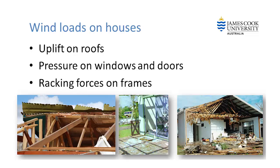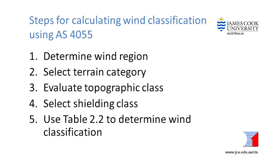Hello. This video aims to help builders and designers determine wind classifications for new houses or renovations anywhere in Australia using AS4055, the Australian standard wind loads for housing. If you have a copy of AS4055, you may want to get it out now. Correct wind classification is important to prevent building damage. Wind loads on houses generate uplift on the roof, pressures and suctions on windows, and racking forces on the walls. The site wind classification is key to ensuring that houses have the appropriate capacity to resist all of these forces. This video presents the steps specified in AS4055 to calculate a site's wind classification.